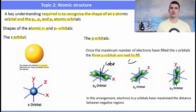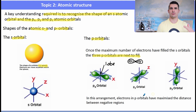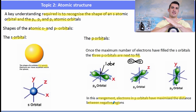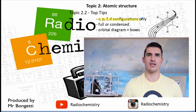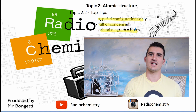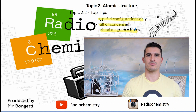The three p orbitals sit on the x, y, and z axes — the px, py, and pz orbitals — maximizing the distance between electrons. Top tips for topic 2.2: use S, P, D, and F configurations only from here on. Look for the words 'full' or 'condensed' in questions, and if orbital diagrams are asked for, draw boxes. Thanks for watching!